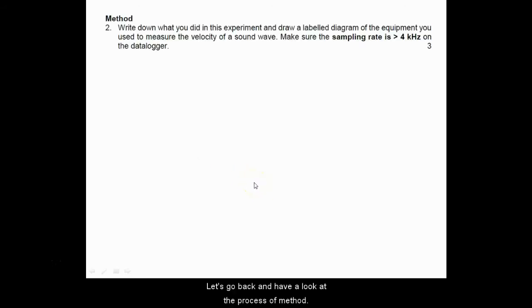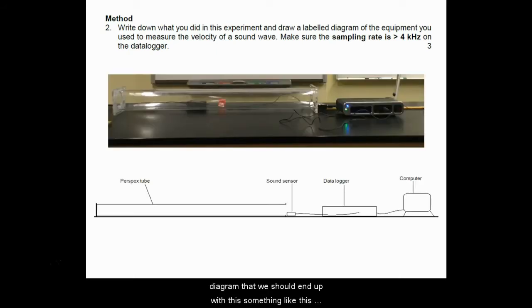Let's go back and have a look at the process of method. This is important in writing a scientific report. It's quite important to be able to write the method in past tense and to include a labeled diagram. What we've got here is the equipment. The kind of diagram that we should end up with is something like this, where we've got here the Perspex tube and each of these labels. Notice how when we're drawing these diagrams, we do it in two dimensions, so we don't do a three-dimensional diagram.